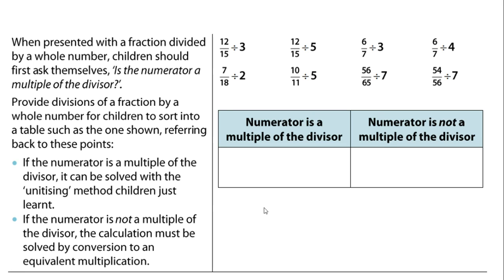Okay so what we were doing yesterday was we were looking at the question and we were thinking do I need to spend my time turning it into an equivalent multiplication, so do I need to do 12/15 multiplied by 1/3, or can I do it the slightly quicker unitizing way? Okay so remember if this numerator is a multiple of the divisor then we can just do 12 divided by 3 and we don't need to do the multiplication.